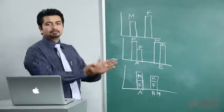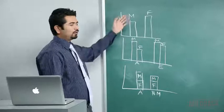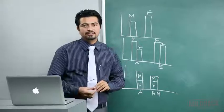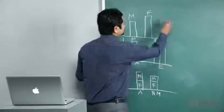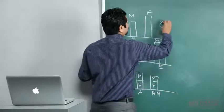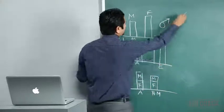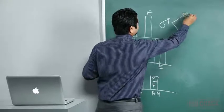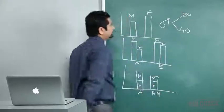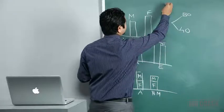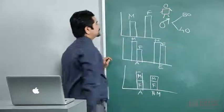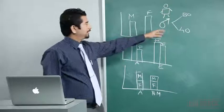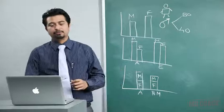Two bars stuck up to each other is a multiple bar chart; only a single bar is a simple bar chart. A pictogram uses pictures to represent data — for example, drawing a male figure to represent a count of males in a group. These are the commonly used types of graphical representations.